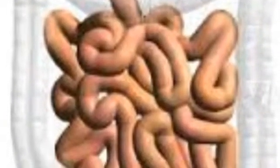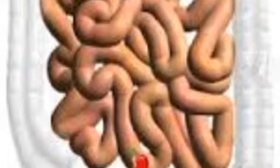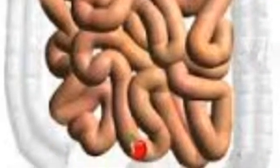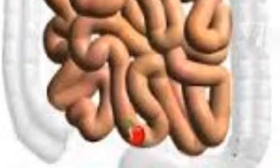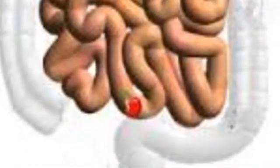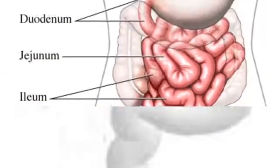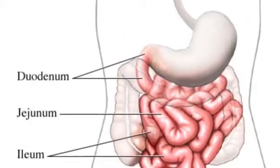There are three sections of the small intestine. The duodenum is the part connected to your stomach. It uses bile from your gallbladder, liver, and pancreas to help digest food.